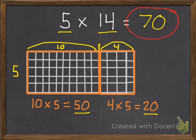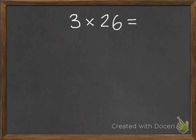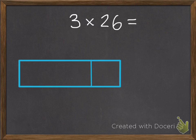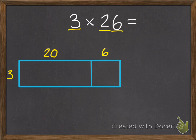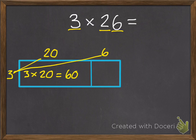And one more example using the area model: 3 times 26. Here's my rectangle with a line down the middle. My 3 goes on the side. My 26 — I'll break apart into 20 and 6. I multiply the first box, which is 3 by 20. 3 times 20 equals 60. Then my smaller part is a 3 by 6 — although in my picture they look about the same, but it's 3 by 6. And 3 times 6 equals 18.